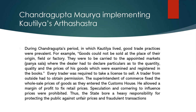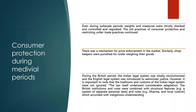During the medieval period, sultanates in India had strict checking for rates and measures, controlling and regulating consumer markets and ensuring consumer rights were protected. During the British period, the Indian legal system was revolutionized by adopting the English legal system, with adaptations based on ancient Indian traditions and customs. There was a system of separate personal laws, dharma, and local customs.